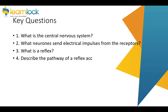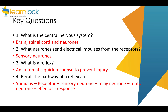Here are some key questions — pause the tutorial and give yourself 10 minutes to answer them. What is the central nervous system? That's made up of the brain, the spinal cord, and neurons. What neurons send electrical impulses from the receptors? These are sensory neurons. What's a reflex? It's an automatic, quick response that does not require a conscious part of your brain — it prevents injury. The pathway of a reflex arc is: stimulus to receptor, to sensory neuron, to relay neuron, to motor neuron, to an effector, which then carries out the response.